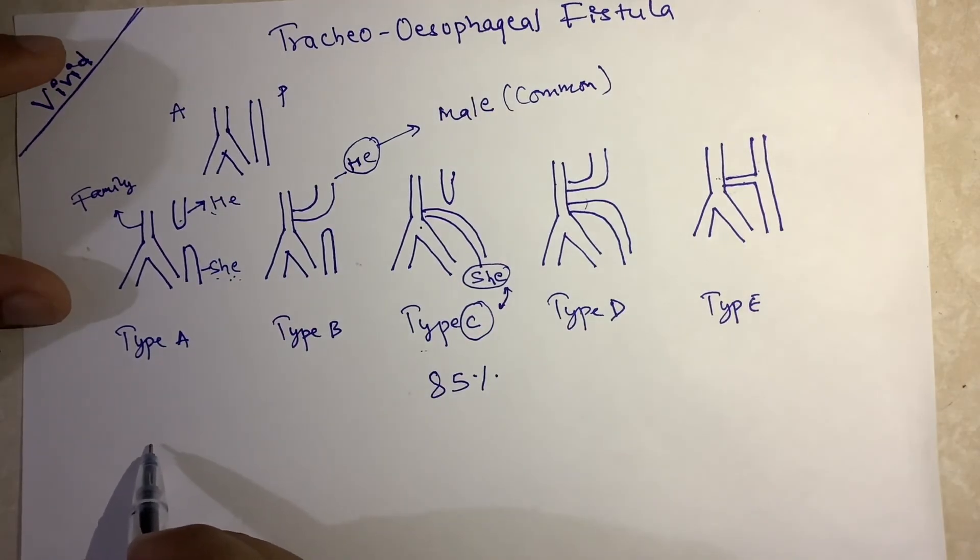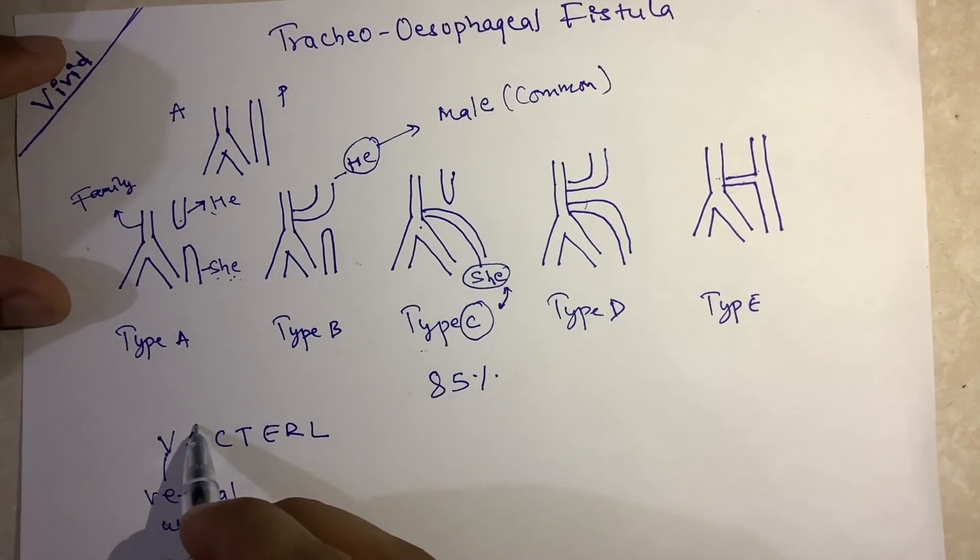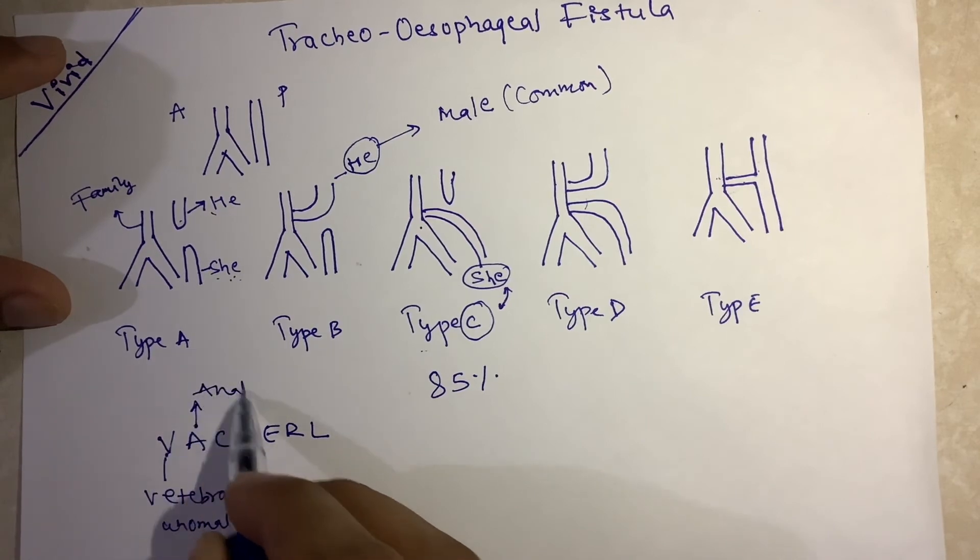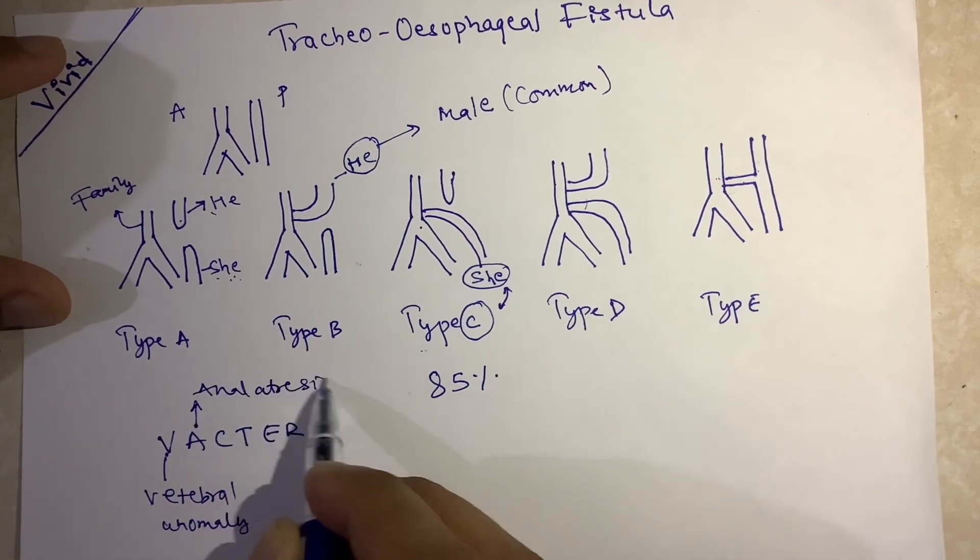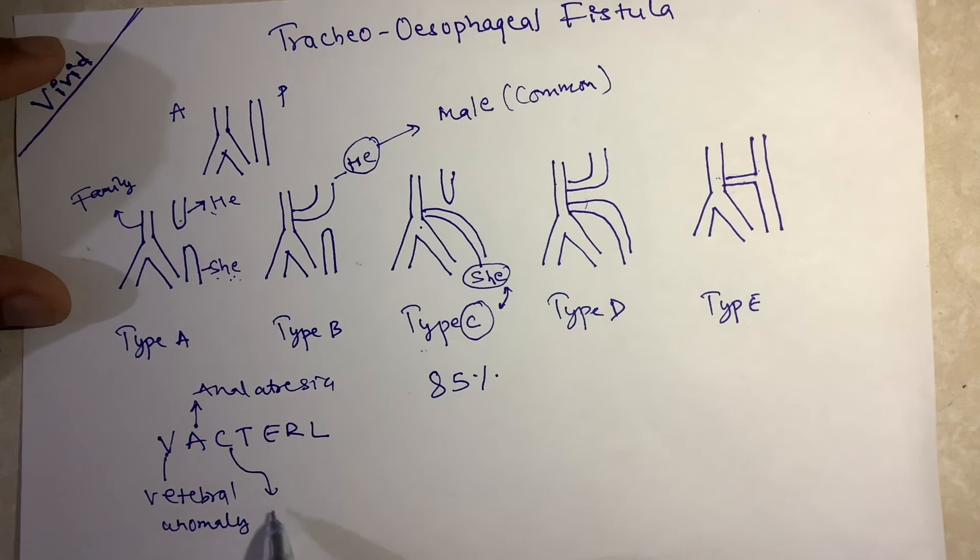This anomaly is also associated with an association known as VACTERL association, which indicates vertebral anomaly, anal atresia, cardiovascular anomalies.